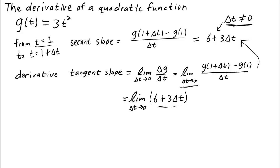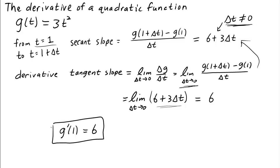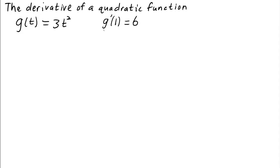What happens to 6 plus 3 times delta t as delta t gets smaller and smaller? This just gets closer to 6, because you get 6 plus something that gets really, really small. So the limit is simply 6. Since we never actually got to delta t equals 0, we don't care about dividing by 0 — we never did divide by 0; we were just dividing by a really, really small number. Therefore, the derivative of g at 1 is equal to 6 — the slope of g at 1 is 6.